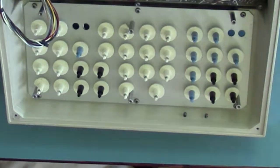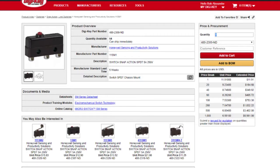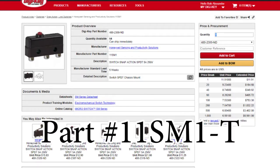Let's say you need to replace one of the key switches. The part number is 11SM1-T. There are similar switches with different terminals. You want the T-type terminals. You can buy them from places like DigiKey and Mouser, but they're cheaper on eBay.